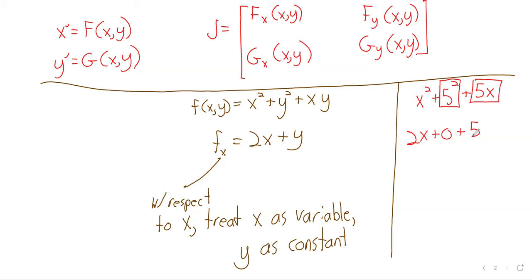Looking at our system, there are four partial derivatives you could take: the partial derivative of f with respect to x, the partial derivative of f with respect to y, the partial derivative of g with respect to x, and the partial derivative of g with respect to y. We take those partial derivatives and put them in the matrix J, the Jacobian.